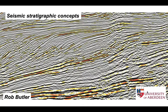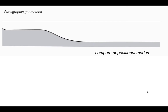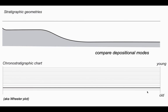Seismic reflection profiles like this provide key information about how sedimentary basins become filled with sediment. In this short video we're going to look at the ways in which sedimentary basins may fill and what their stratigraphic representation could be. We'll use a template showing an imaginary seabed in grey and sea level shown by a thin black line at the top, comparing three different modes of sediment deposition. We'll represent the depositional geometries on a chronostratigraphic chart — a spatio-temporal plot otherwise known as a Wheeler plot.